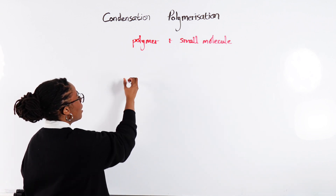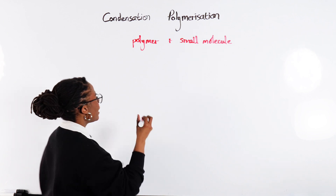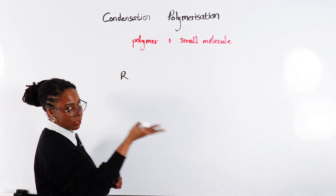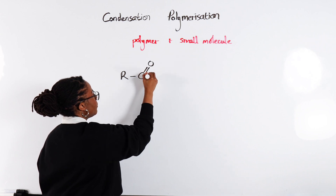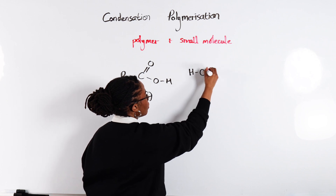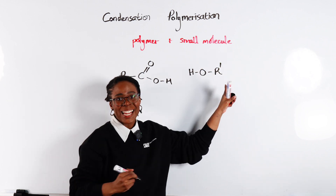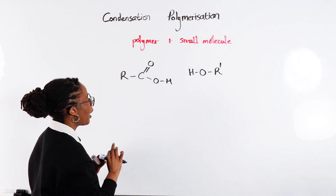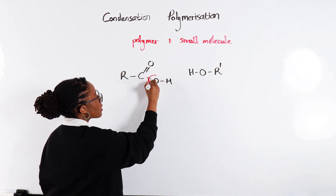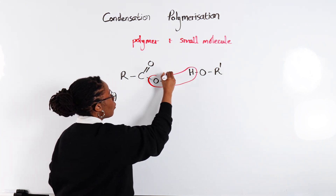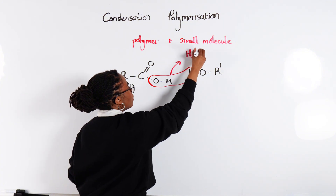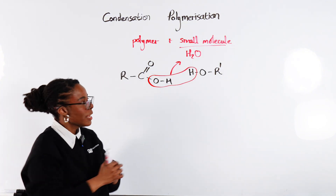One way that we can make an ester — the first way that we learn — is by reacting together a carboxylic acid. I'm just going to choose R, a random carboxylic acid like this, reacting with an alcohol — I'm calling this R' just to show it's a different R. When those come together, we lose the OH from the carboxylic acid and the H from the alcohol, and those come together as H₂O, the small molecule that we lose.